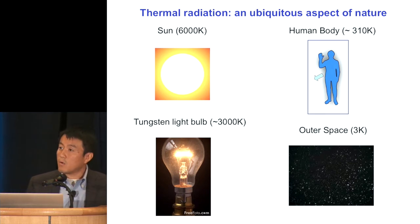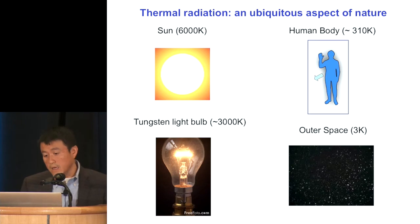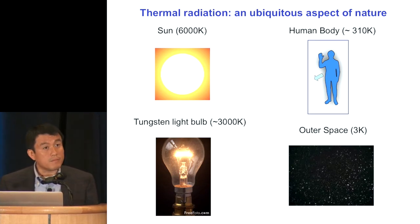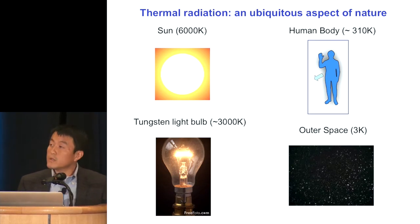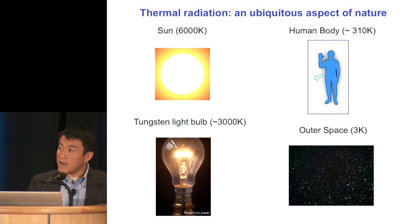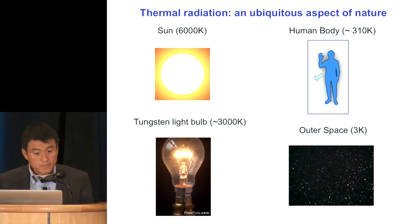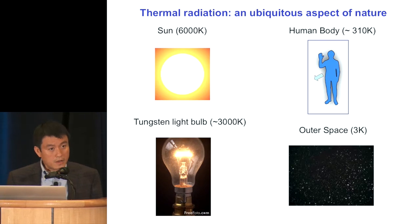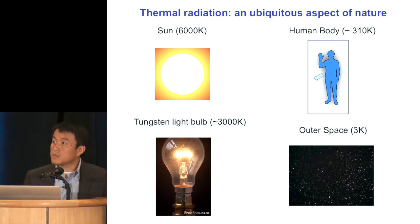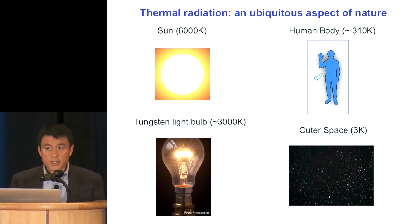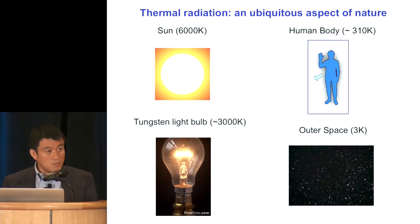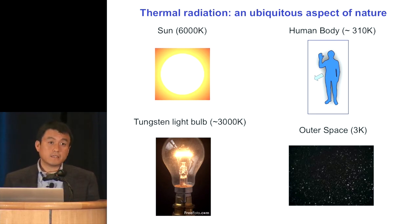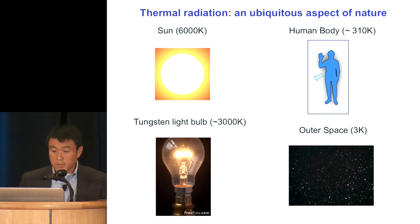On the other scale, you can talk about ourselves, which turned out to be a very good thermal emitter as well, at a room temperature of 300 Kelvin. And lastly, one can talk about the sink of the sky, and that's probably at 3 Kelvin. So there are wide ranges of thermal bodies that all emit.